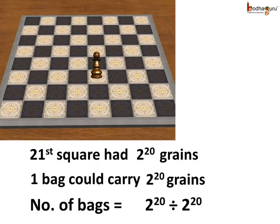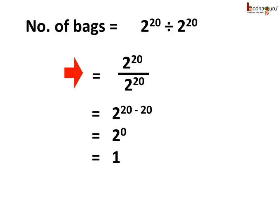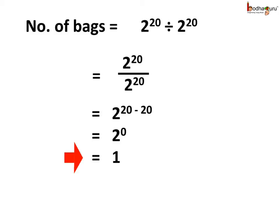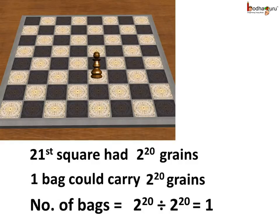The twenty-first square had 2 to the power 20 grains, and we assumed one bag could carry 2 to the power 20 grains. So the number of bags required for the grains at the twenty-first square would be 2 to the power 20 divided by 2 to the power 20. Using the law of exponents, it becomes 2 to the power 20 minus 20, which is equal to 2 to the power 0. And again using the law of exponents, 2 to the power 0 is equal to 1. So the number of bags required for the twenty-first square is equal to 1.